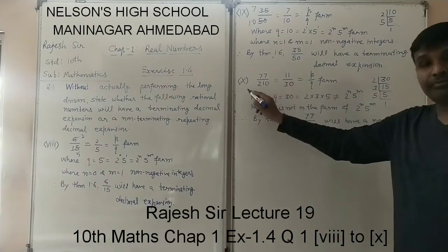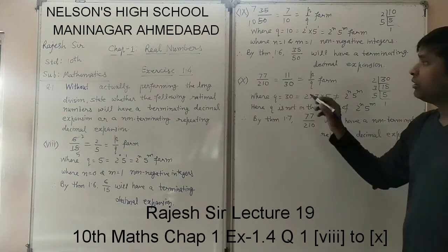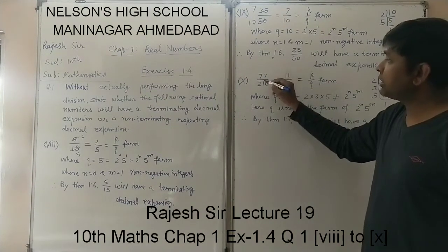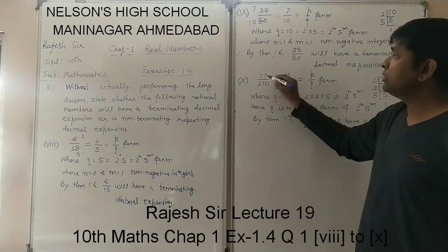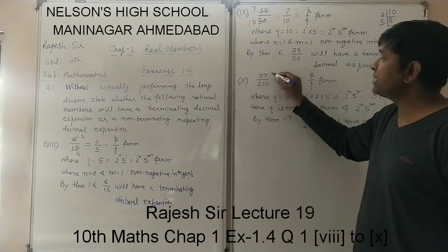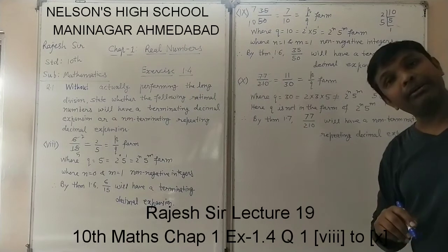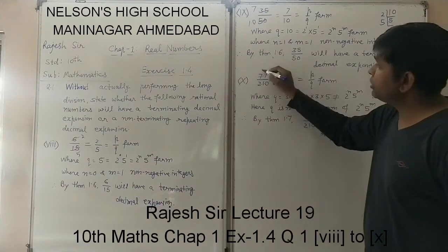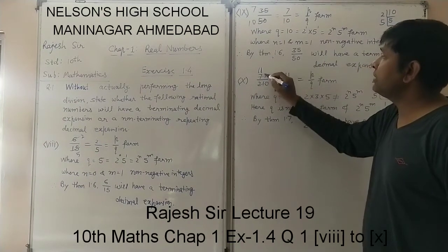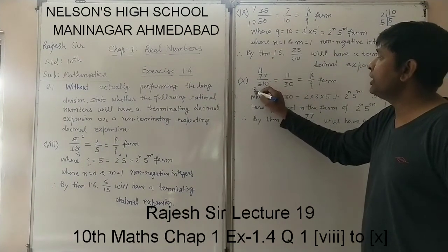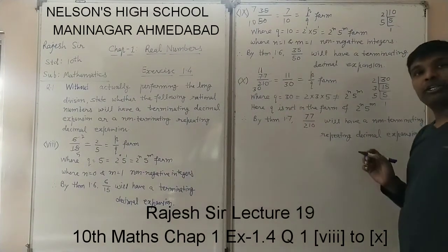Now question 10: 77 upon 210. Once again, it has a common factor between P and Q — that common factor is 7. Dividing both by 7 gives us 11 upon 30 as the simplest form.